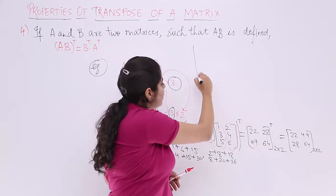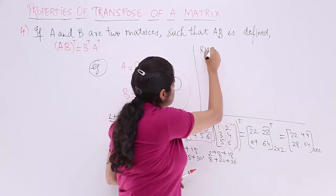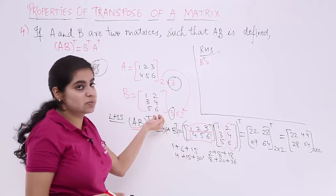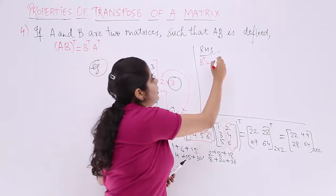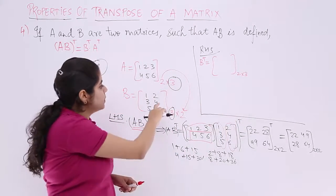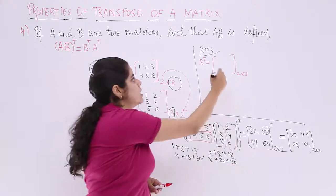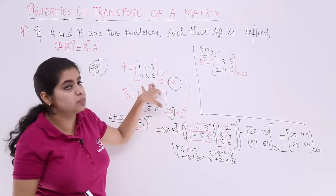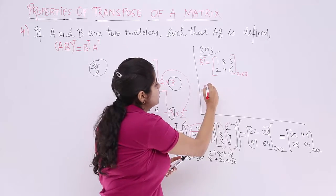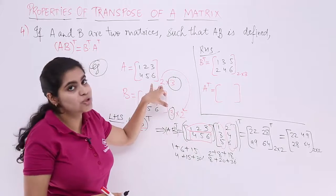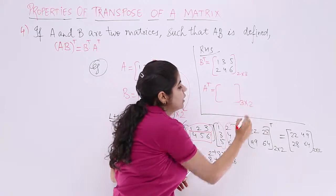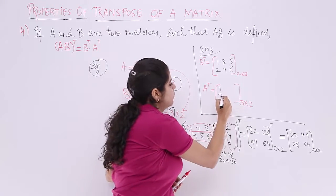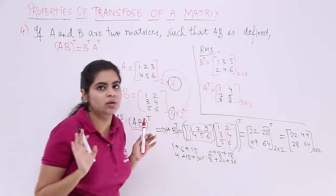For the RHS, we first find B transpose. B was a 3×2 matrix, so B transpose is a 2×3 matrix: [1, 3, 5; 2, 4, 6]. Next, A transpose: A was a 2×3 matrix, so A transpose is a 3×2 matrix. The rows of A become columns, giving A transpose = [1, 4; 2, 5; 3, 6].